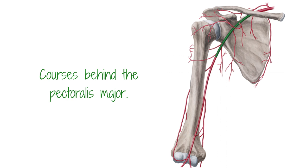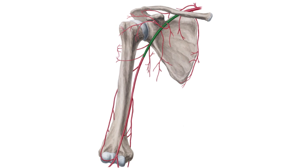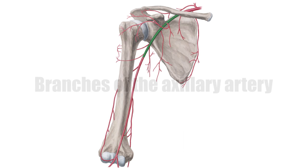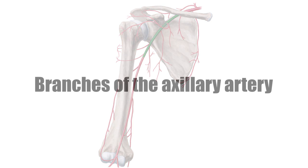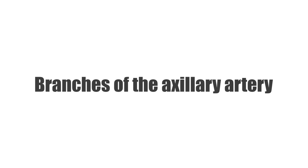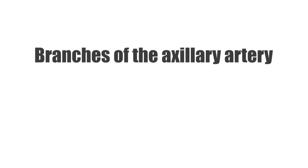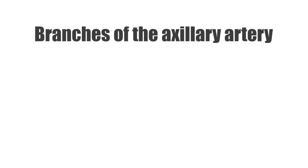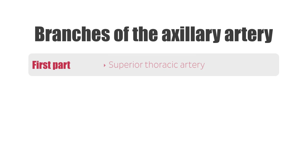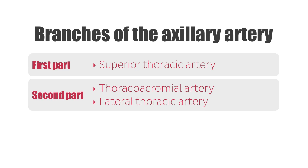The auxiliary artery is divided into three parts. It's helpful for memorization to consider that the number of branches in each part match the part itself. In the first part, it branches into the superior thoracic artery. In the second part, there are two branches: the thoracoachromial artery and the lateral thoracic artery.